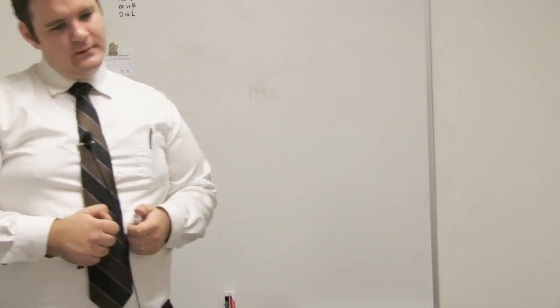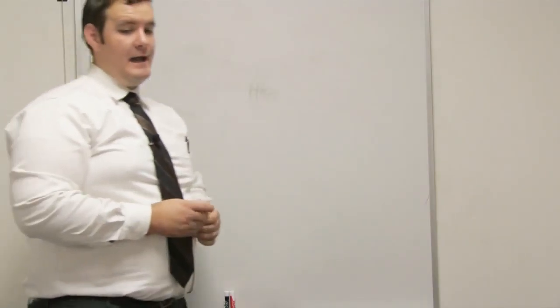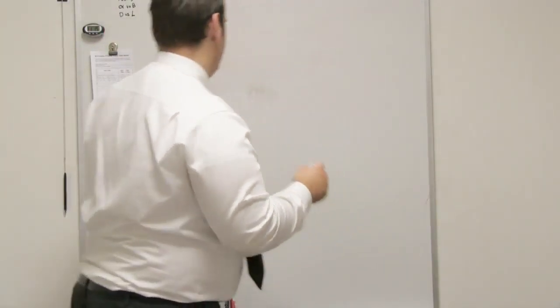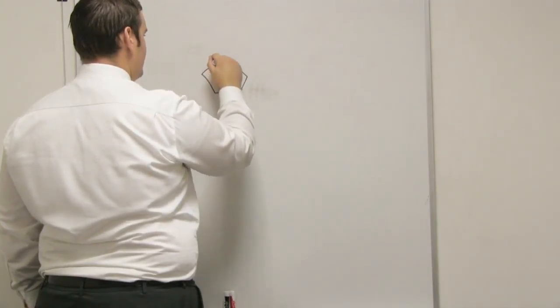So the anomeric carbon is always the carbon with four different functional groups, right? Yeah, and then on a chain, it's the one that has two oxygens bound to it.